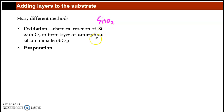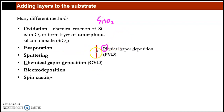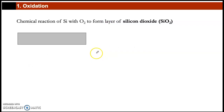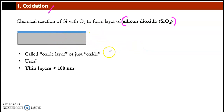To add silicon oxide to the substrate, we use oxidation. In oxidation, silicon reacts with oxygen to create silicon oxide. The aim of oxidation is to form a silicon oxide layer — typically used as an insulator layer. We start with the substrate and deposit the oxide layer on top.